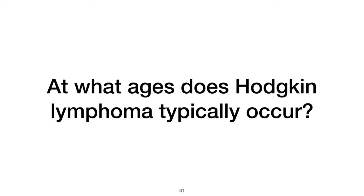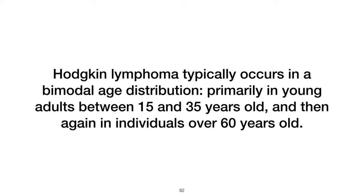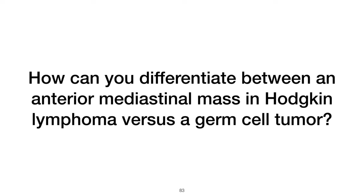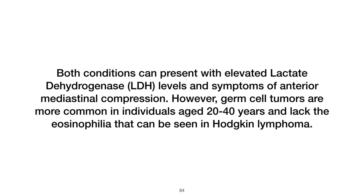At what ages does Hodgkin lymphoma typically occur? Hodgkin lymphoma typically occurs in a bimodal age distribution, primarily in young adults between 15 and 35 years old, and then again in individuals over 60 years old. How can you differentiate between an anterior mediastinal mass in Hodgkin lymphoma versus a germ cell tumor? Both can present with elevated LDH and symptoms of anterior mediastinal compression; however, germ cell tumors are more common in individuals aged 20 to 40 years and lack the eosinophilia that can be seen in Hodgkin lymphoma.